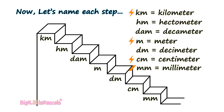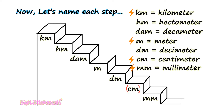In this stair, km (kilometer) is the biggest unit of measurement, while mm (millimeter) at the bottom is the smallest. The most commonly used units are kilometer, meter, centimeter, and millimeter — marked with a flash sign.